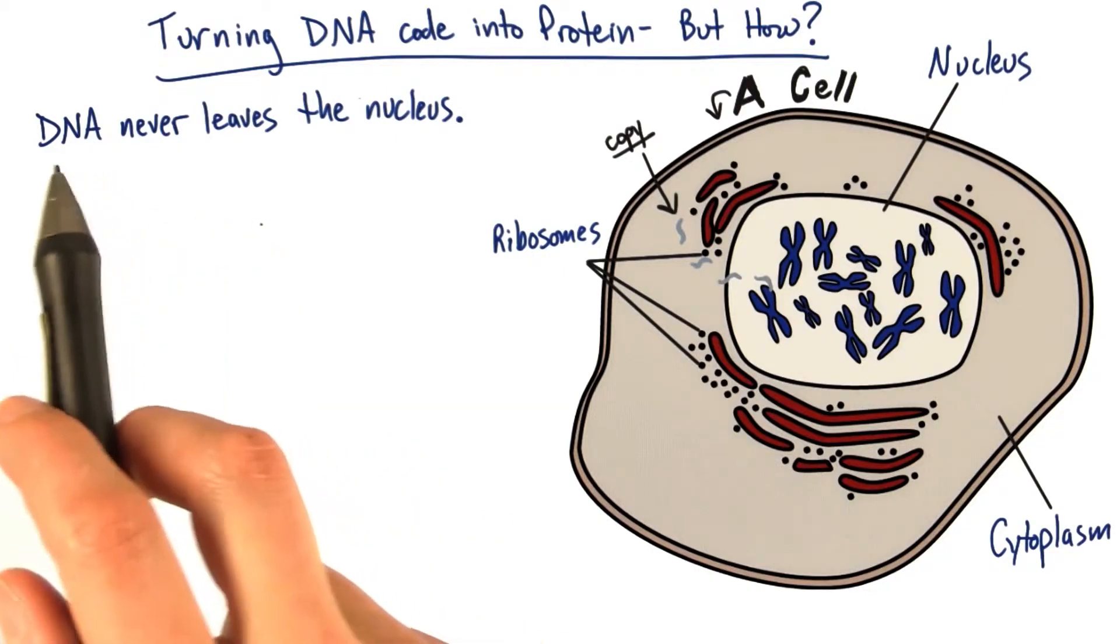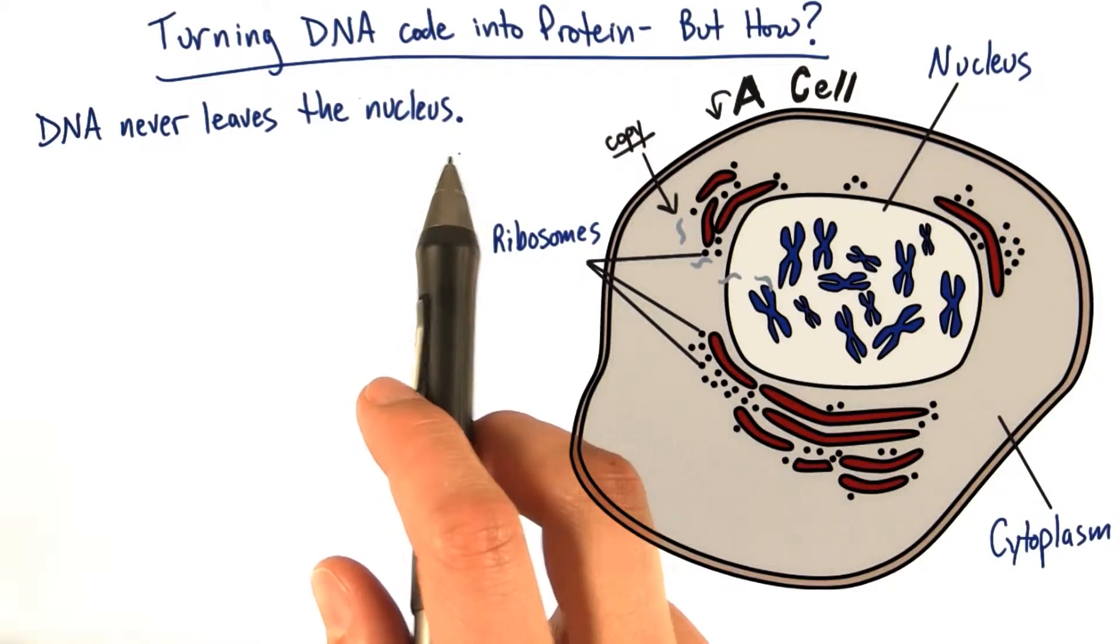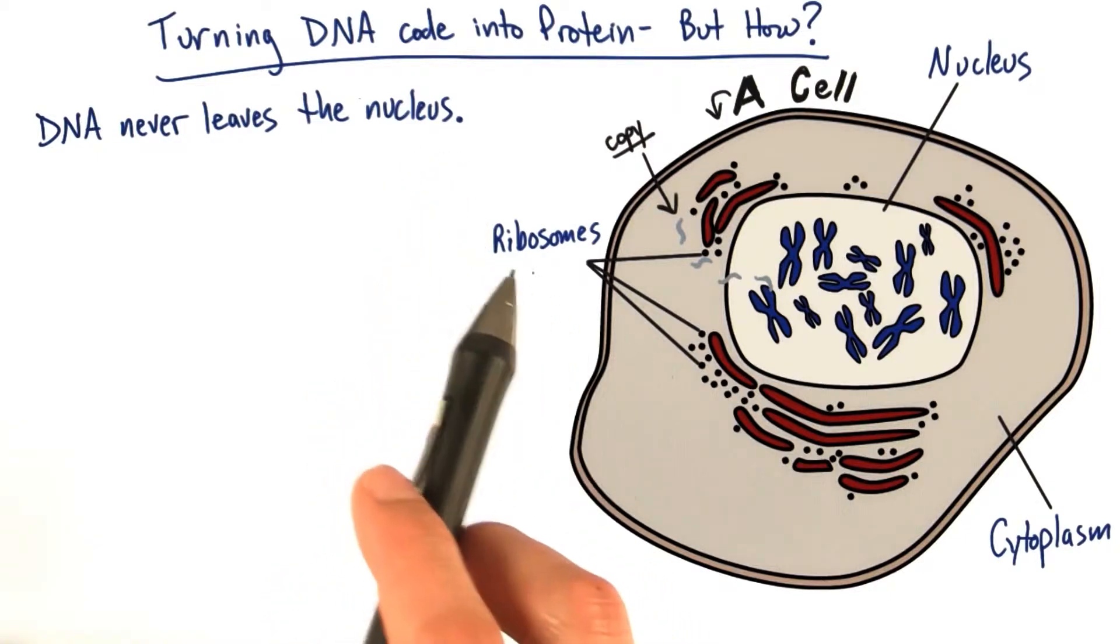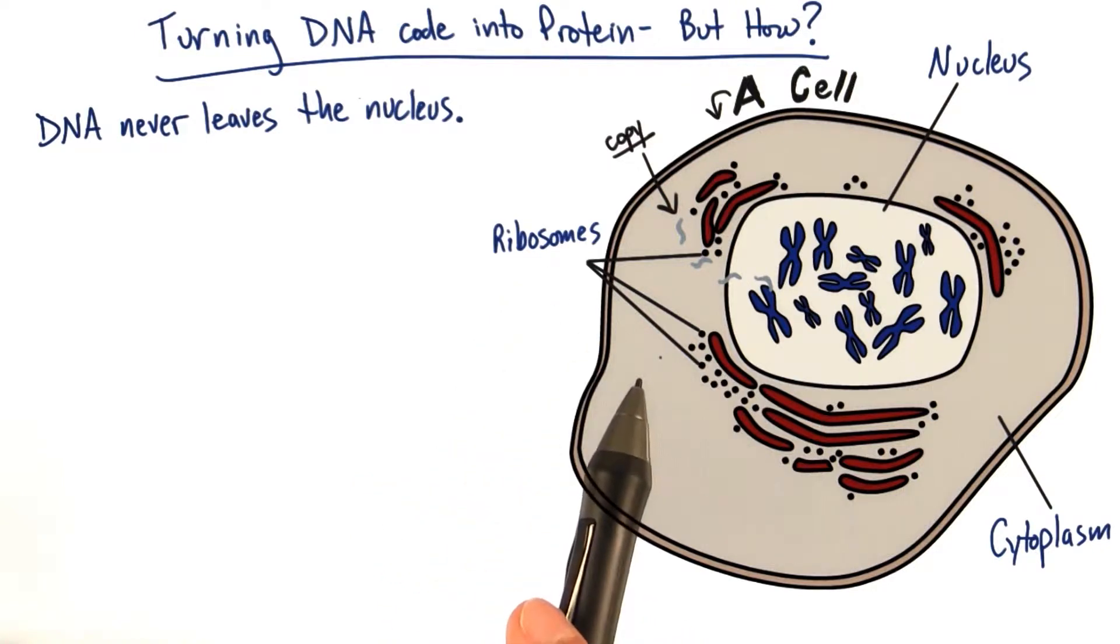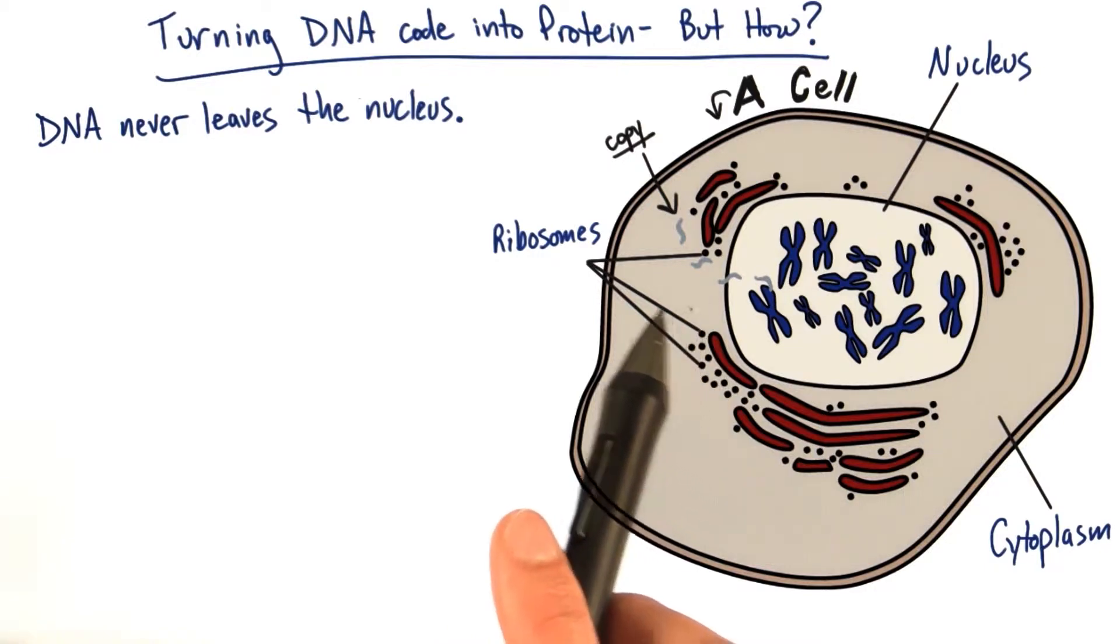So it's important for you to recognize that DNA never leaves the nucleus. It never comes in direct contact with the machinery necessary to build proteins called ribosomes. And as a solution to this problem, there's an intermediate step that involves a chemical cousin of DNA known as RNA.